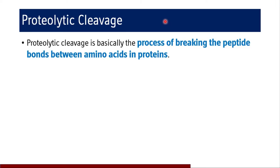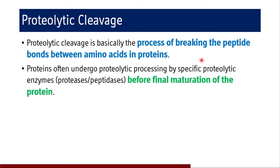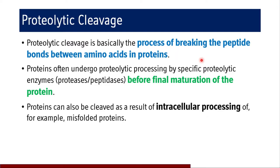Coming to the first one — proteolytic cleavage. Proteolytic cleavage is the process of breaking the peptide bonds between amino acids in a protein, and this happens before the final maturation of the protein. Specific enzymes like proteases and peptidases carry out proteolysis, and the protein can also be cleaved during intracellular processing of misfolded proteins. An example is the conversion of pre-proinsulin to proinsulin to insulin — the activation of insulin occurs due to proteolytic cleavage, which is an irreversible post-translational modification.